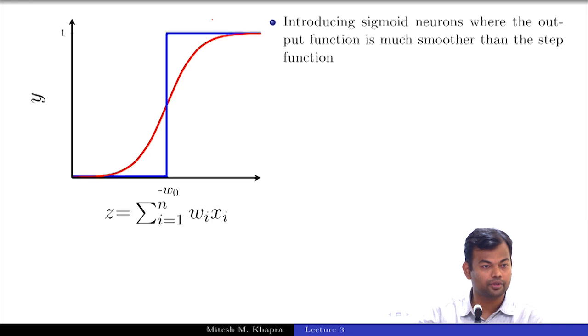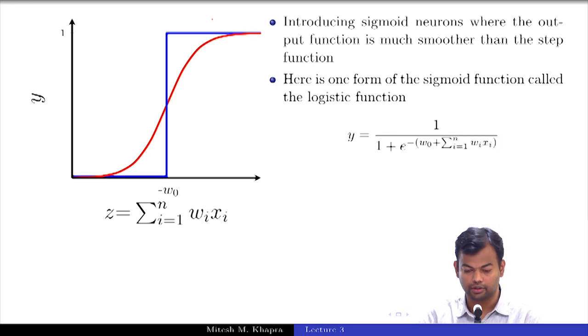To counter this, we introduce something known as sigmoid neurons. This is just a smoother function or a smoother version of the step function. How many of you know what a sigmoid function is, what is the formula for a sigmoid function? Quite a few. Here is one such sigmoid function which is called the logistic function. Remember that sigmoid is a family of functions. These are functions which have this S shaped logistic function which I have shown here is one such function and the other function that we will see in this course is something known as the tanh function. Let me just get into a bit more detail with this logistic function.